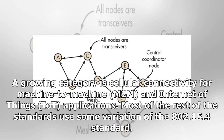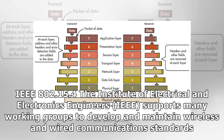A growing category is cellular connectivity for machine-to-machine (M2M) and Internet of Things (IoT) applications. Most of the remaining standards use some variation of the 802.15.4 standard.